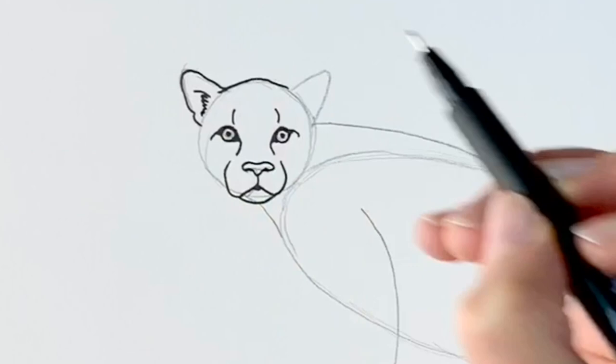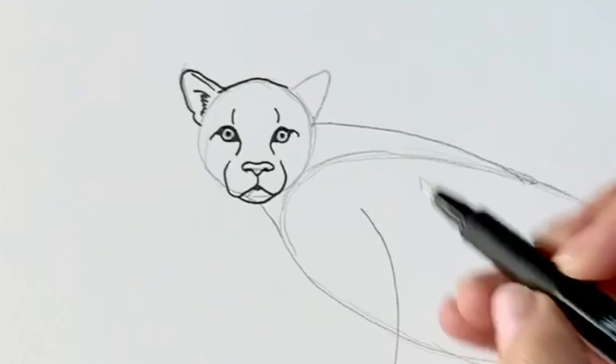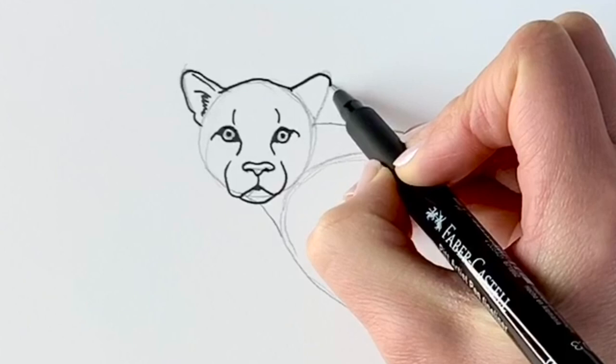Just draw the outer part of the ear there. And then I'm going to do the same on the other side, exactly the same as before. There we go. And then again, a little squiggle. There we go. And then the line coming up like that.